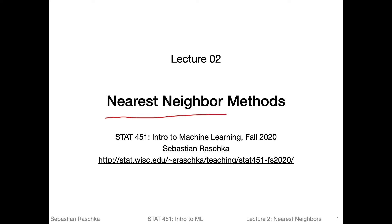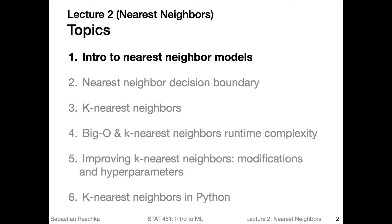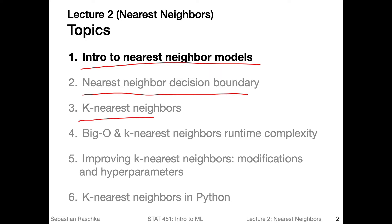So in lecture two, we are going to talk about nearest neighbor methods. This includes aspects about nearest neighbor methods in general, but also more specifically the K nearest neighbor algorithms — for example, K nearest neighbors for classification or regression. To make this lecture more approachable, I structured it into six parts. First, we will look at some applications of nearest neighbor methods, and also a basic one nearest neighbor method. Then I will show you the decision boundary of the nearest neighbor method.